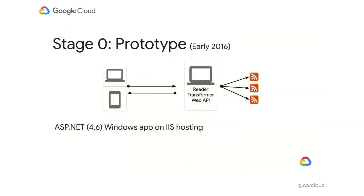The back end was initially written with ASP.NET 4.6. It was a Windows app, and it was deployed on an IIS host. There were three main services: the reader would fetch the RSS feeds, the transformer would convert them into a common format that we defined, and the web API would serve the feeds to the mobile front end.